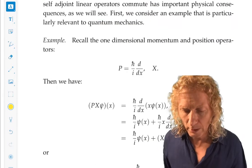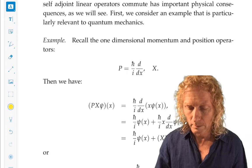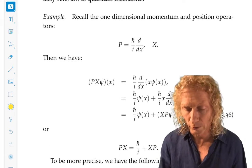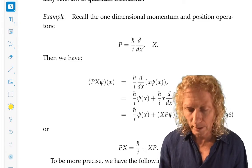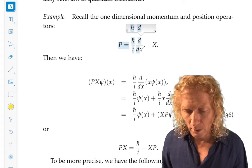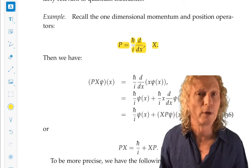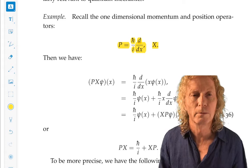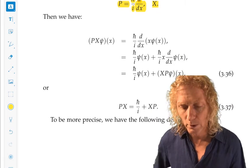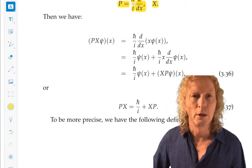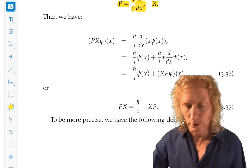Let's look at two linear operators that are familiar and play a big role in this course. The momentum operator, operators are denoted by uppercase P, and that's h bar over i, d by dx. The position operator is just multiplication of a function, these operators are acting on functions, by the position variable. Let's compute PX acting on a function, psi of x, and XP acting on a function, psi of x.